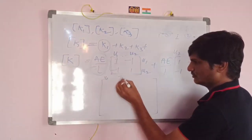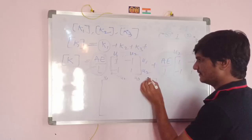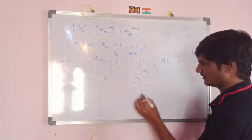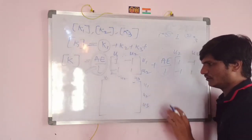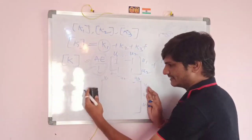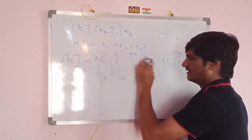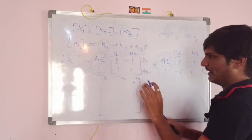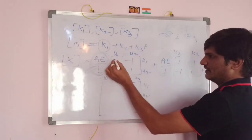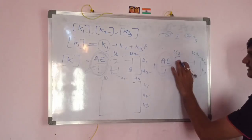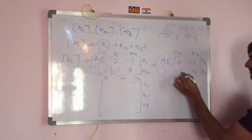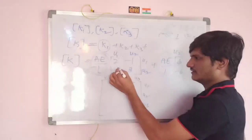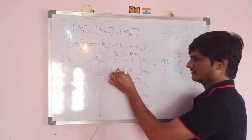Now I will show how to assemble the global stiffness matrix. The matrix has rows and columns labeled u1, u2, u3, since there are three displacements. I will use representative numbers inside the matrix to illustrate the general method clearly.